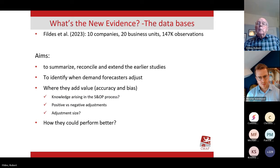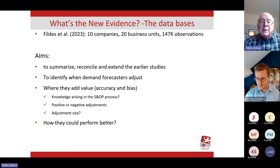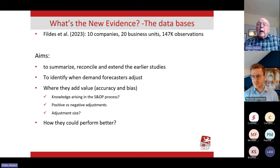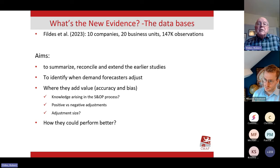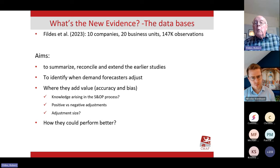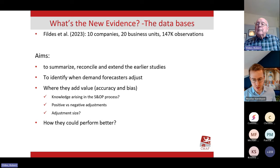We've put together new evidence from 10 companies and 20 business units, aiming to summarise and reconcile the early work — to identify when demand forecasts are adjusted, what drives the decision to adjust, and when value is added and bias improved. There is some evidence that adjustments occur more often with products that have a short life cycle. We also want to understand whether we can modify the S&OP process and what the software components contribute.